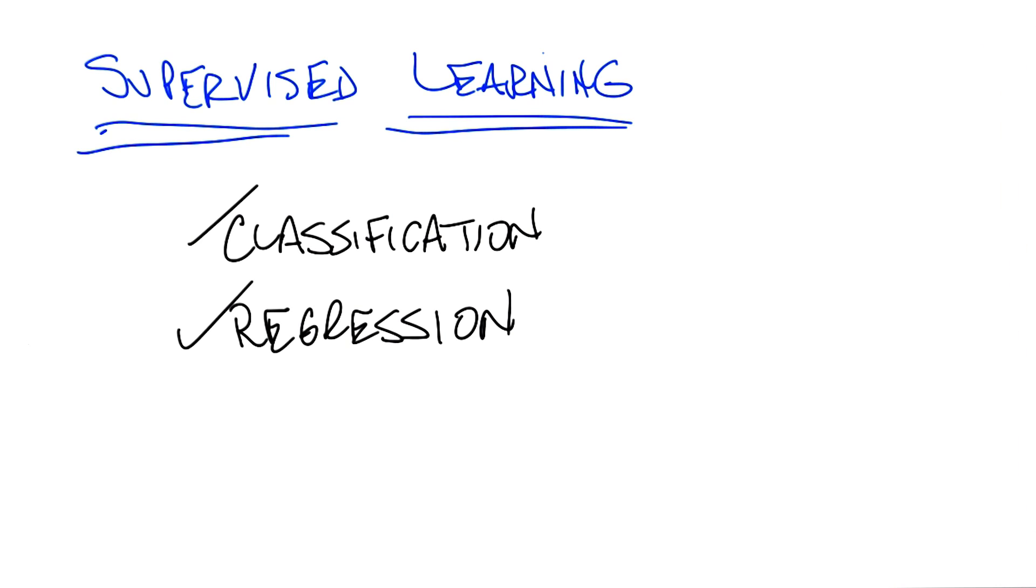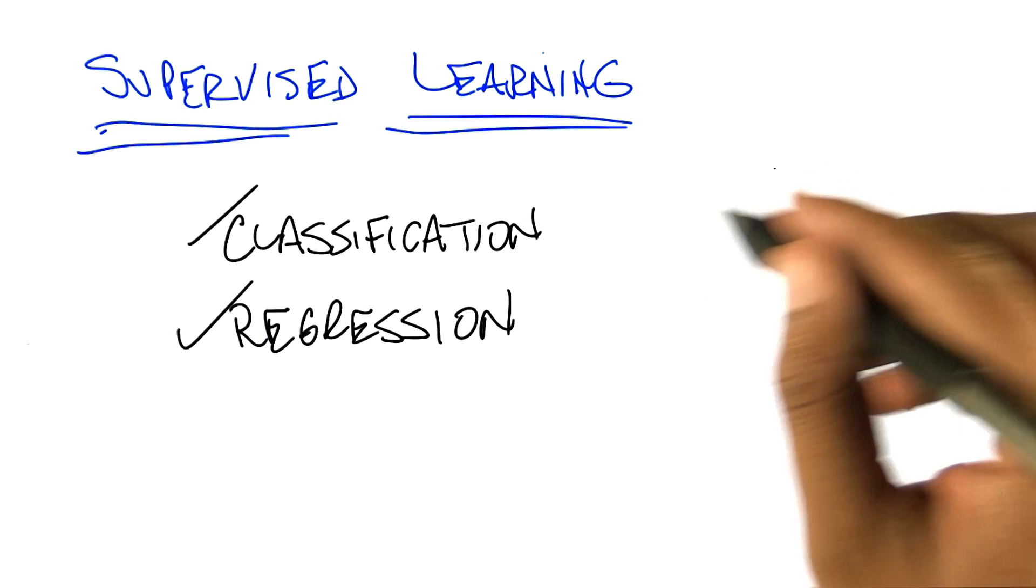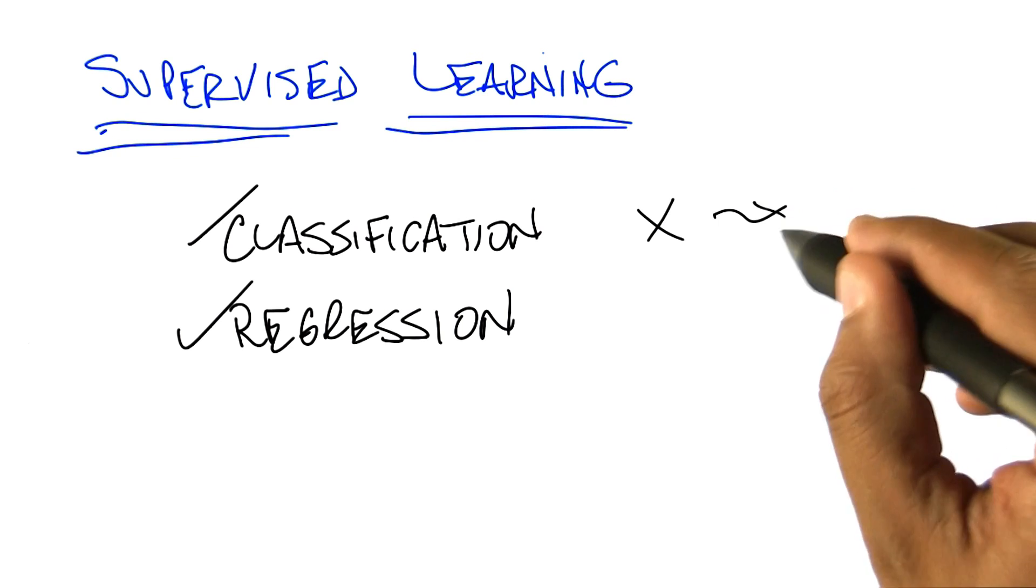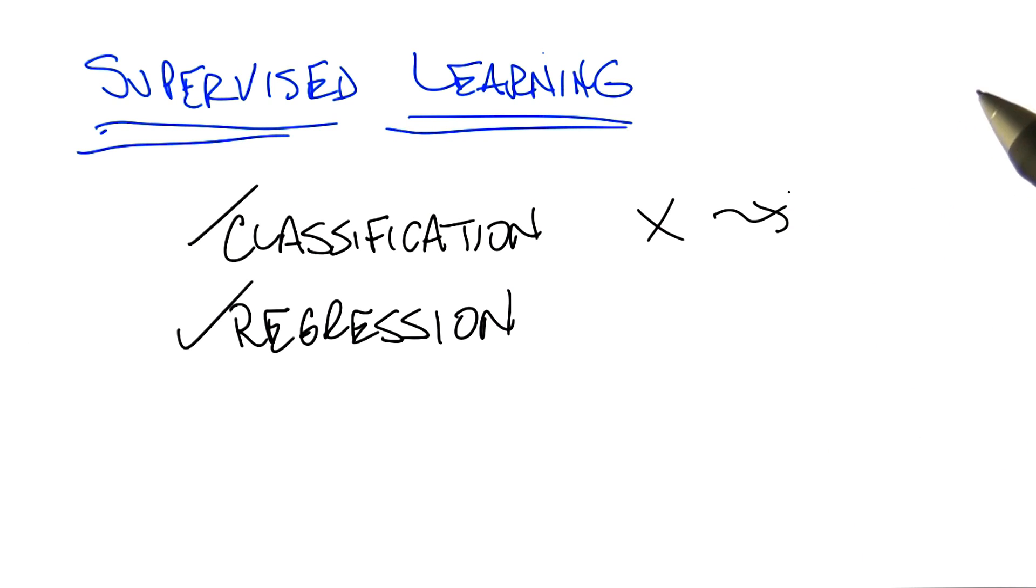Classification is simply the process of taking some kind of input, let's call it x, and I'm going to define these terms in a couple of minutes, and mapping it to some discrete label. Usually for what we're talking about, something like true or false.